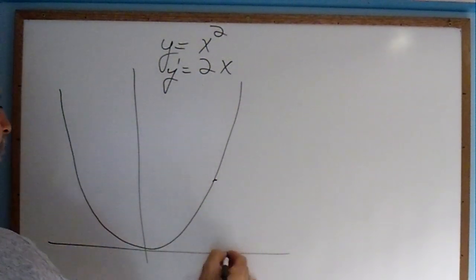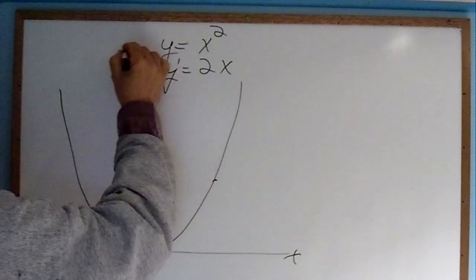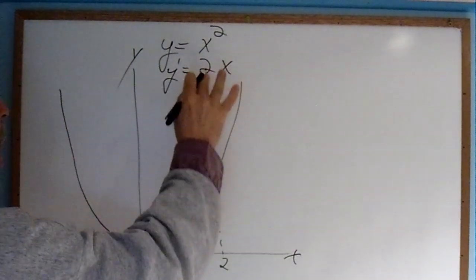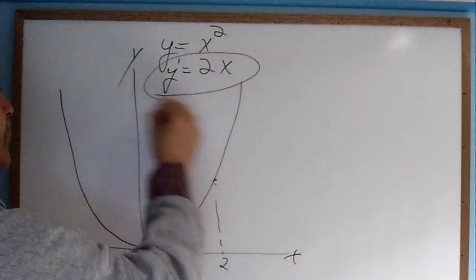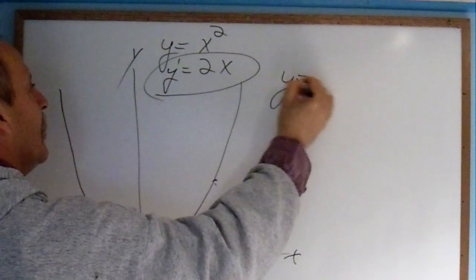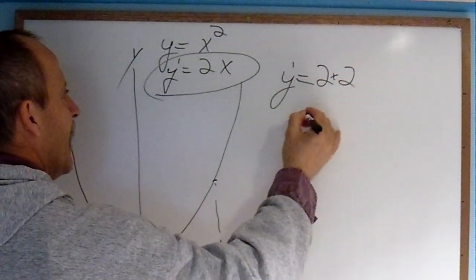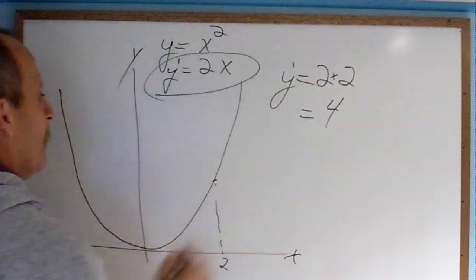Let's take the point here at x equals 2. There's the x axis, y axis. At this point, x is equal to 2 according to our equation here. Y prime equals 2 times x. When x equals 2, the slope would be equal to 4.